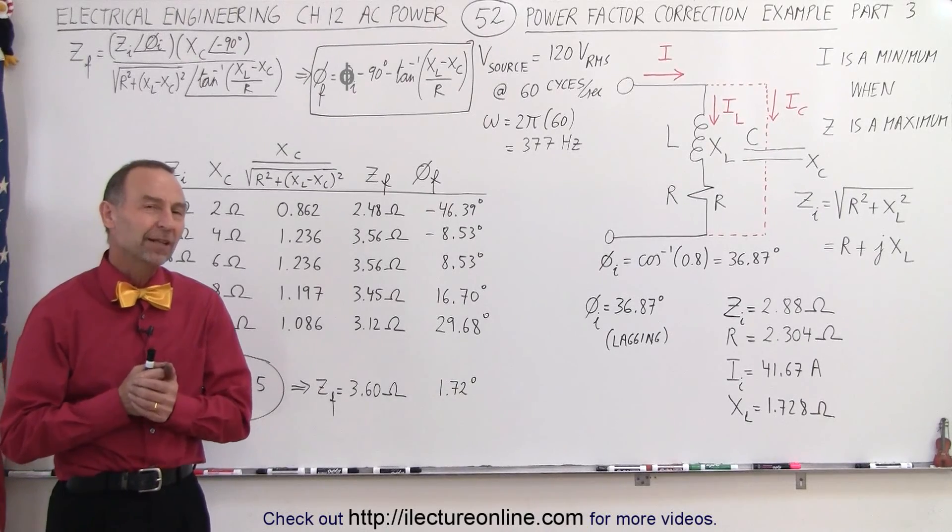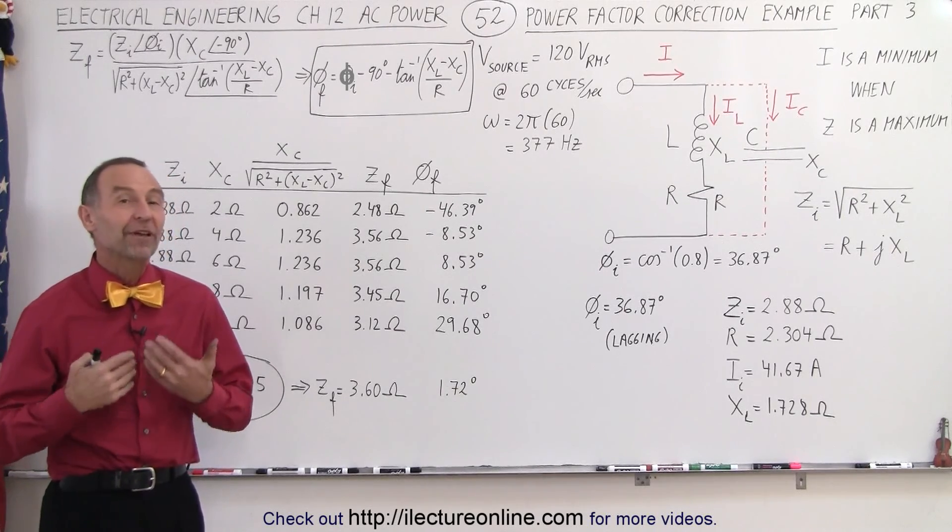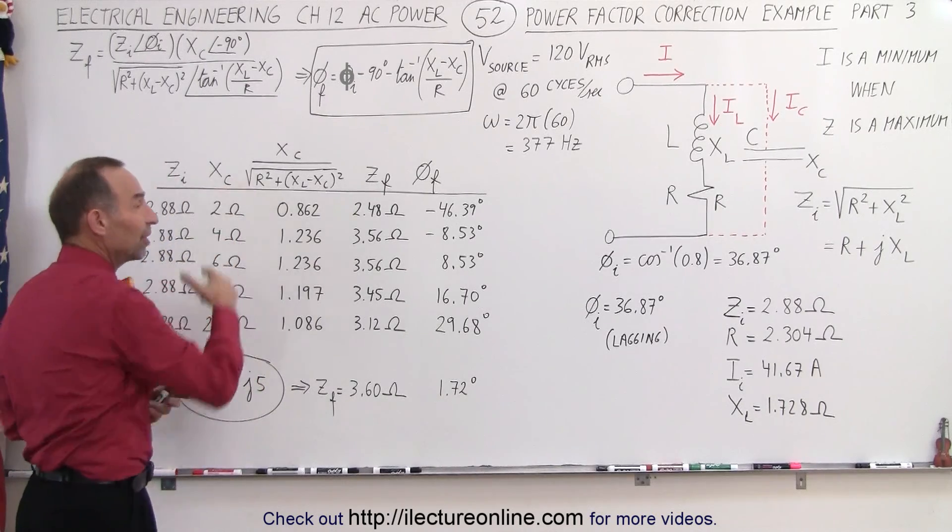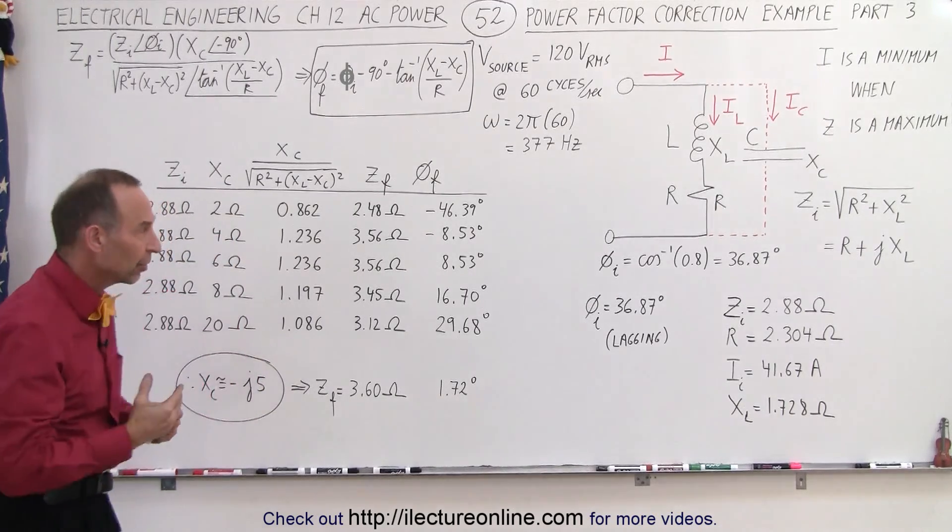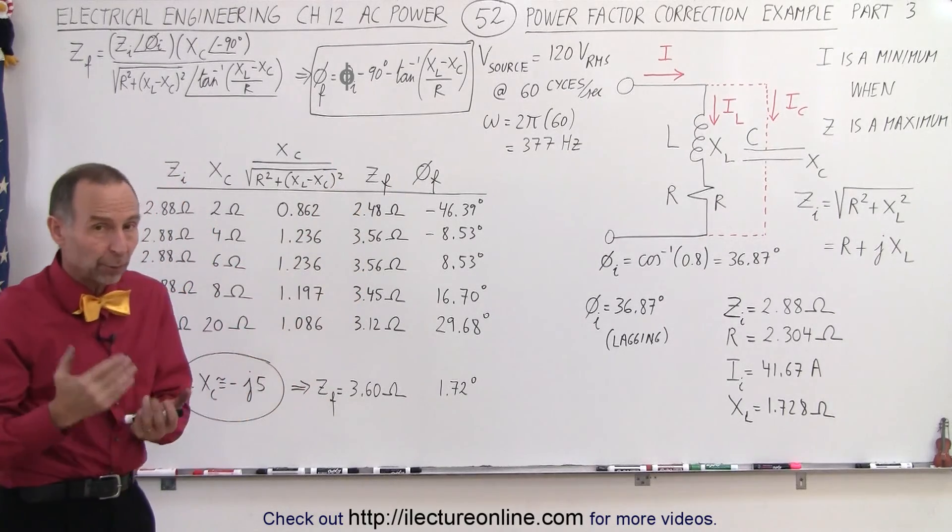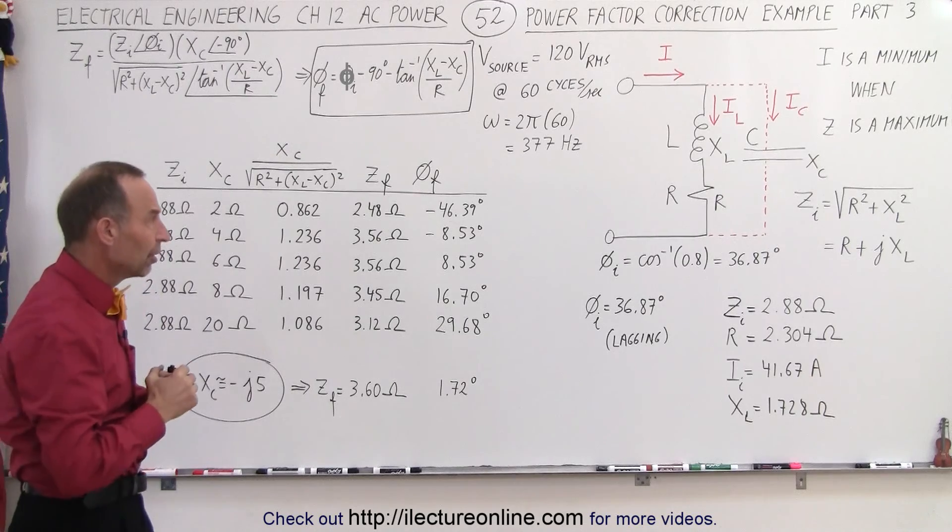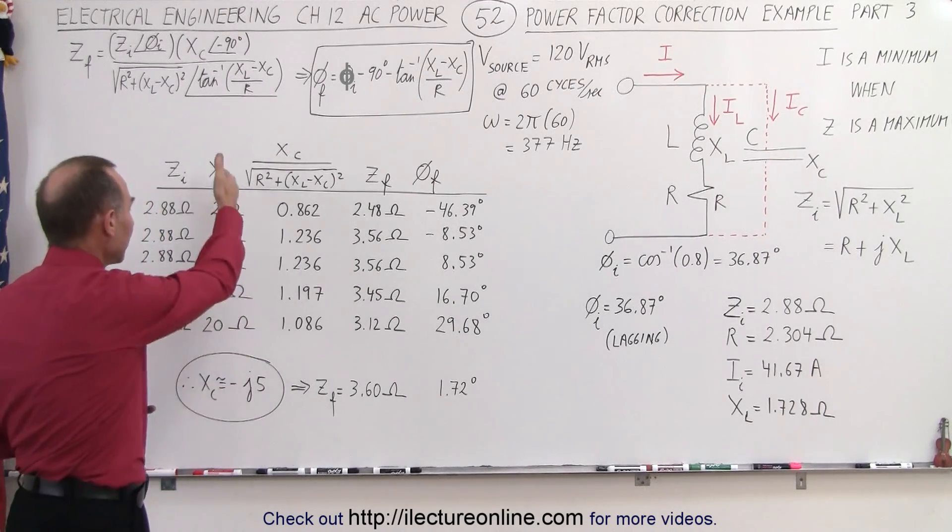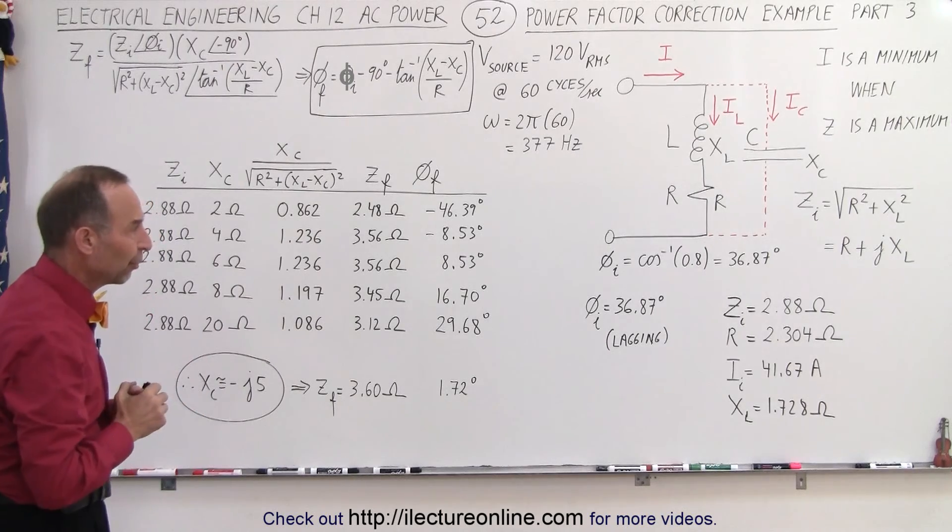Welcome to ElectronLine. Now let's take a look and see what it does to the phase angle. By putting in various values for X sub C, the capacitive reactants, we're going to get a different impedance. Of course what we wanted was the largest impedance possible, but let's also take a look at the phase angle changes when we put in different capacitive reactants, just like we did before.